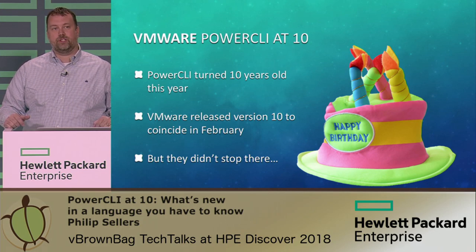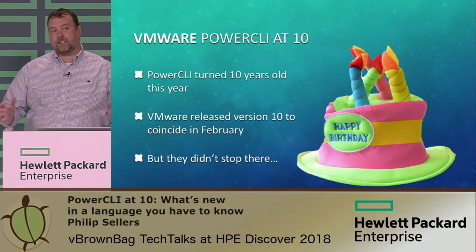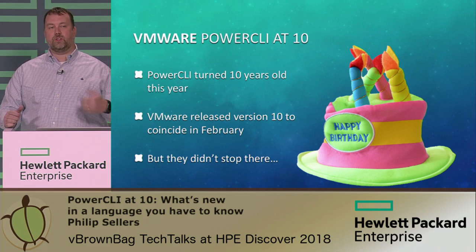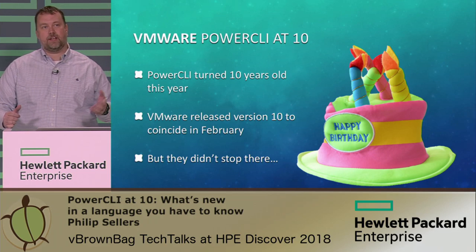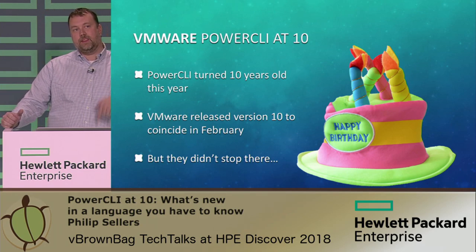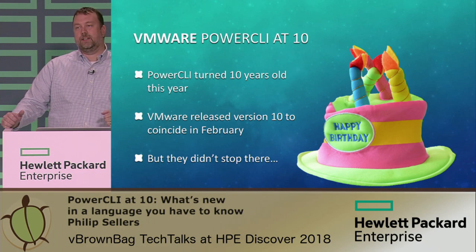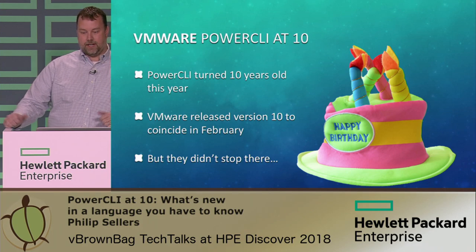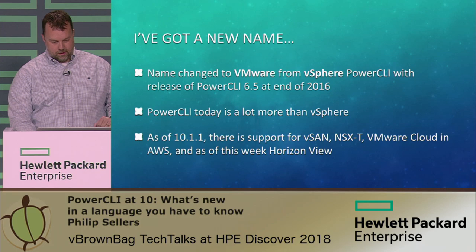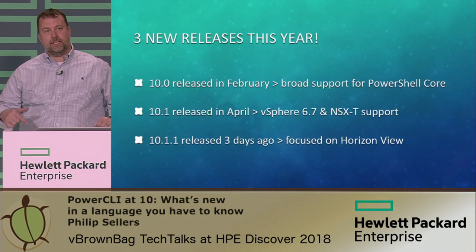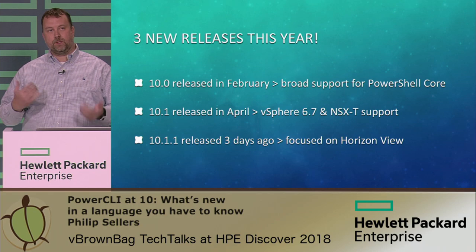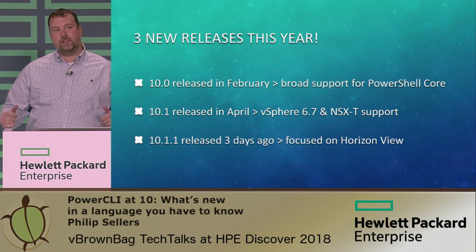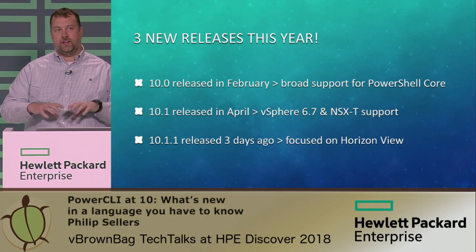Let's talk about where PowerCLI is at version 10 — because it's also 10 years old. We went from version 6.5 last year; 6.5.4 came out at the end of 2017. Then around February this year, VMware released version 10 to coincide with its 10th birthday. We've already gotten three releases this year, and they're steadily building the technology, the modules, and the VMware sphere of supported products.